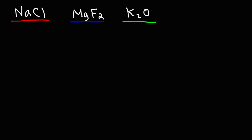Now let's look at our next example: magnesium fluoride. Magnesium is a metal with two valence electrons. Fluorine is a nonmetal with seven valence electrons. Fluorine is a halogen just like chlorine, so each fluorine atom wants only one electron.